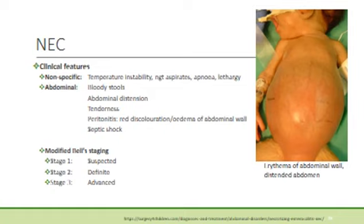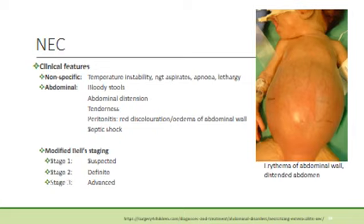In stage 2, it is definite NEC where the baby can be mildly or moderately ill. At this stage, there is ileus on the abdominal x-ray with pneumatosis intestinalis. This can progress to grade 2b where the baby becomes more ill and portal vein gas can be seen on the x-ray. In stage 3, the baby has advanced NEC and can be severely ill with signs of hypotension, acidosis or even DIC. In stage 3a, the gut is very ill but pneumoperitoneum has not yet happened — the bowel has not yet perforated. In stage 3b, the bowel perforates and pneumoperitoneum can be seen on the abdominal x-ray.